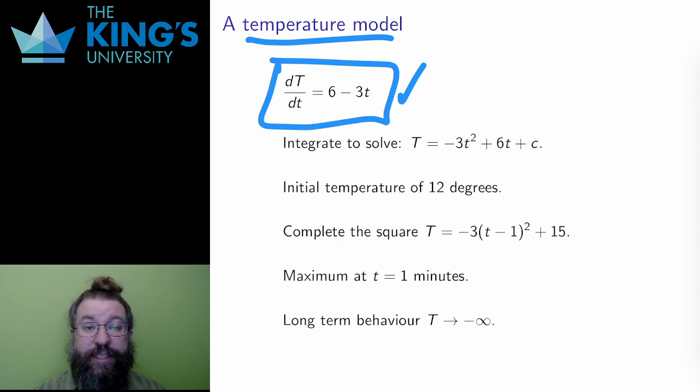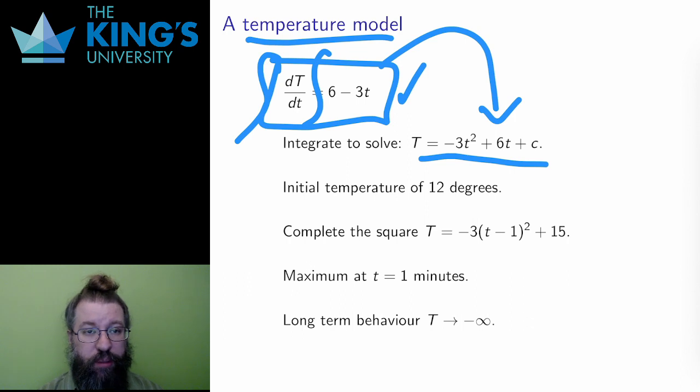In this case, the DE is fine. I can just integrate both sides in lowercase t and solve it to get the function, the temperature model uppercase T equals negative 3t squared plus 6t plus c. The c value is unknown unless there is an initial value, so let's say there is an initial value of 12 degrees, so T of 0 equals 12.